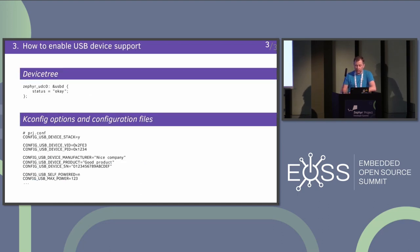So how to enable USB device support in Zephyr: the first thing you need is, from your port's device tree perspective, to provide a Zephyr USB zero node label. That is a node label used internally by the stack to identify a controller. For Nordic Semiconductor it is USB-E, but it differs from port to port.